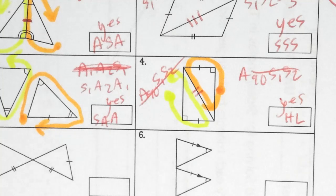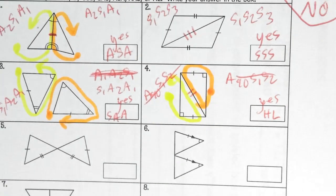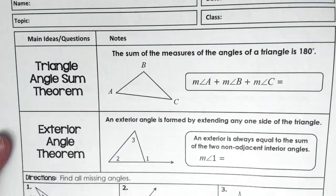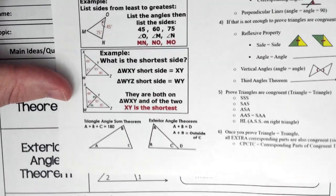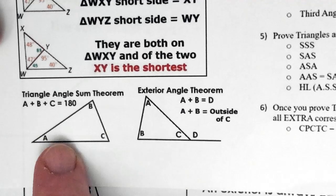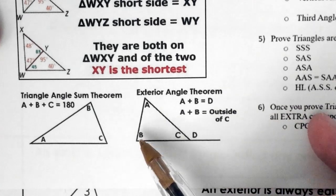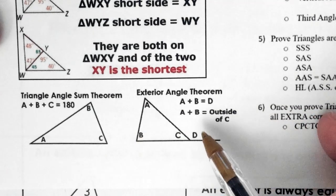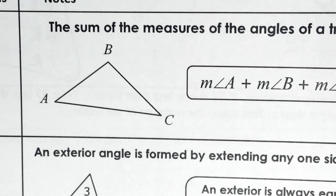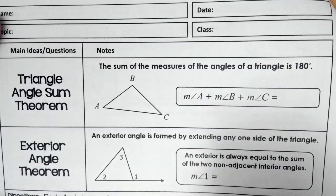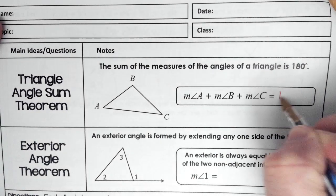That was our mini-lesson. Let's go to page six. On the very bottom of your hot topics: triangle angle sum theorem — all the angles add up to 180; and exterior angle theorem — the two non-adjacent angles add up to equal the outside of the third one. We're going to use these rules.